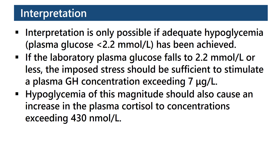Interpretation is only possible if adequate hypoglycemia has been achieved. If the laboratory plasma glucose falls to 2.2 mmol per liter or less, the imposed stress should be sufficient to stimulate a plasma growth hormone concentration exceeding 7 micrograms per liter. Hypoglycemia of this magnitude should also cause an increase in the plasma cortisol to concentrations exceeding 430 nanomoles per liter.